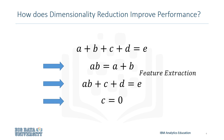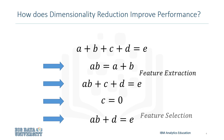Now, consider if C was equal to zero, or an arbitrarily small number. It wouldn't really be relevant, therefore it could be taken out of the equation. By doing so, you'd be using Feature Selection, because you'd be selecting only the relevant variables and leaving out the irrelevant ones.